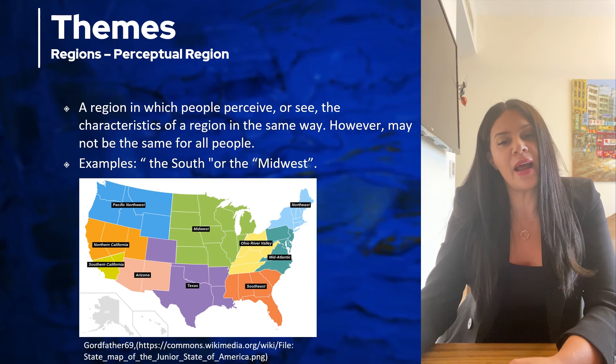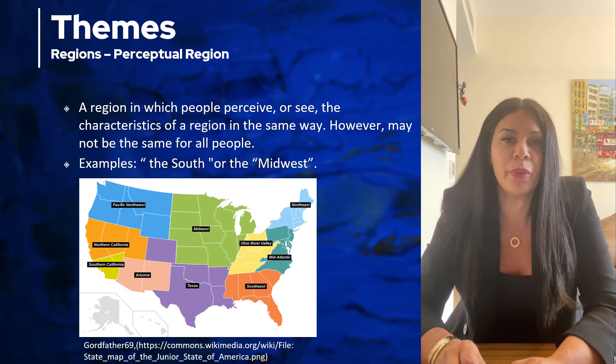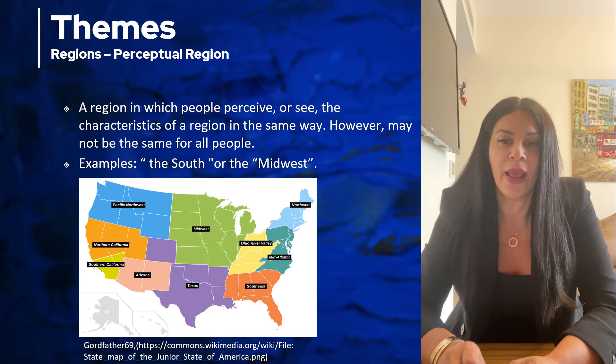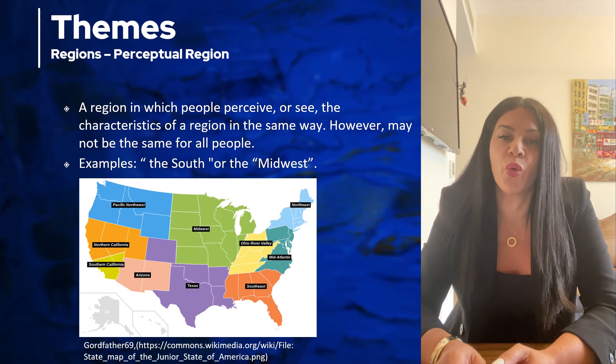Then there are perceptual regions. The word perceptual comes from the word perceive, which means to see. A perceptual region is a region that is dependent on how someone sees the location — it's determined by how a person wants to see a place or what story they want to tell.